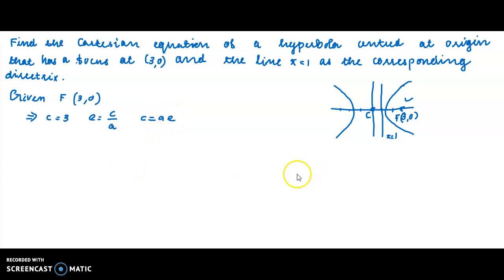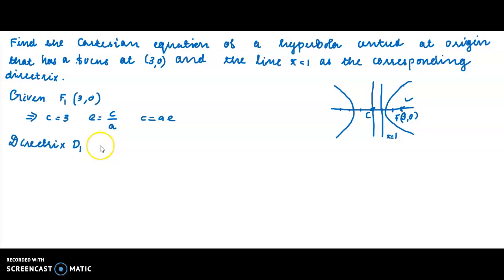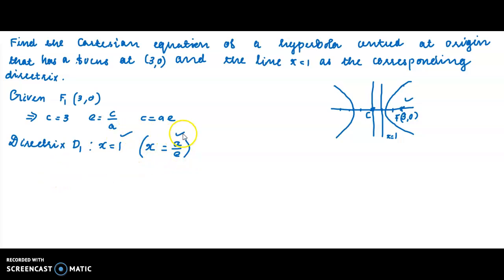c is equal to a·e. The directrix equation for a standard hyperbola is x = a/e. The corresponding directrix d1 is x = 1. So from the standard form, a/e = 1, which gives us a/e = 1.